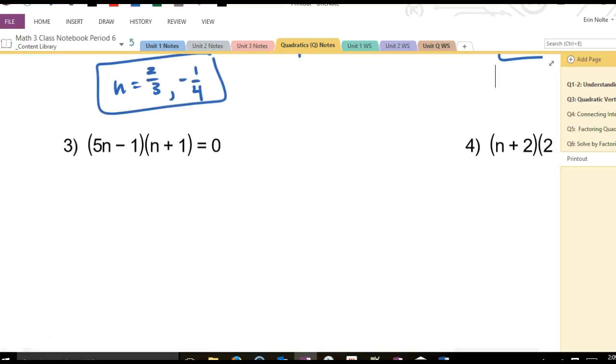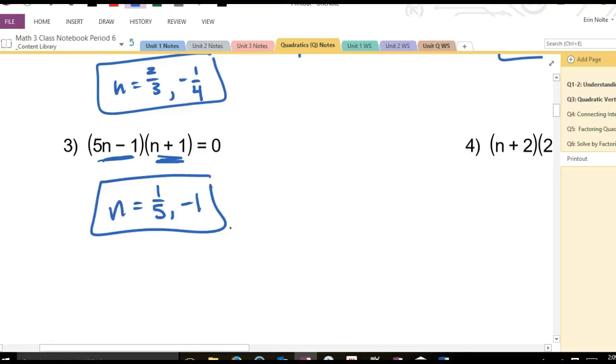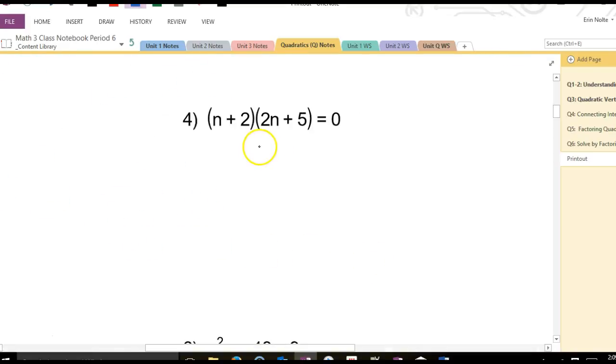What about number 3? Can you go straight to the answers here? For this one, you would add 1, divide by 5. 1 divided by 5 is 1 fifth. What would this one give me? Negative 1. Negative 1, right? You would subtract the 1 to the other side.